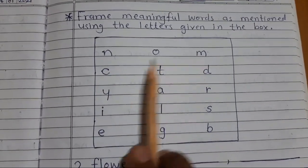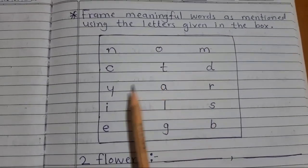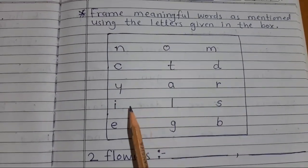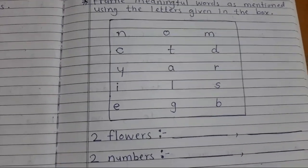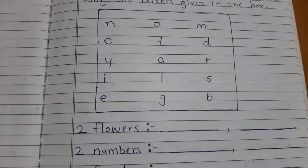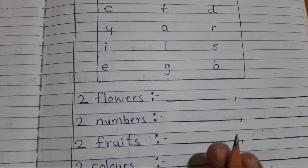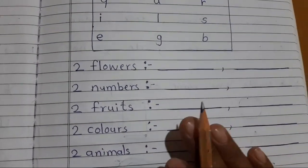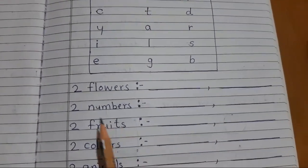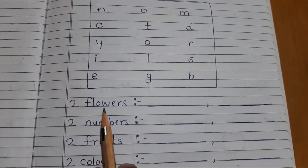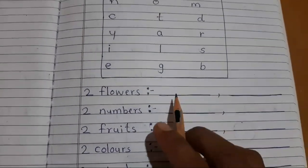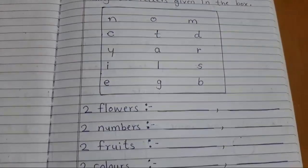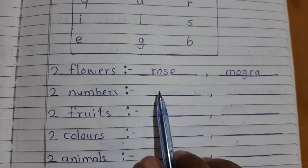See as you can see here in the box some letters are given. N-O-M-C-T-D-Y-A-R-I-L-S-E-G and B. So what you have to do is this work already be done in the workbook but for the practice we are doing in a notebook. So you have to write two flowers name. Two flowers name you have to write here using these letters.